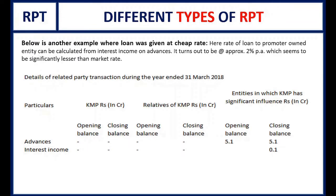Another example: a loan given at a cheap rate. In the related party transaction section you will see KMP — Key Management Personnel. We need to see who is listed as KMP, including promoters, and then analyze the related party transaction section. In this example, there is a 5.1 crore loan from the listed company to a promoter-owned company at only 2% interest rate.